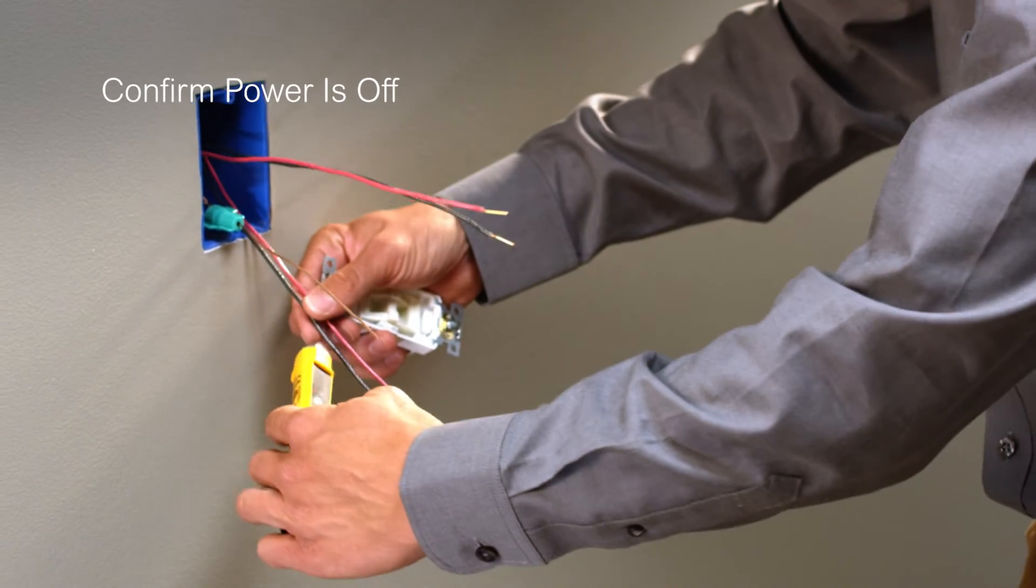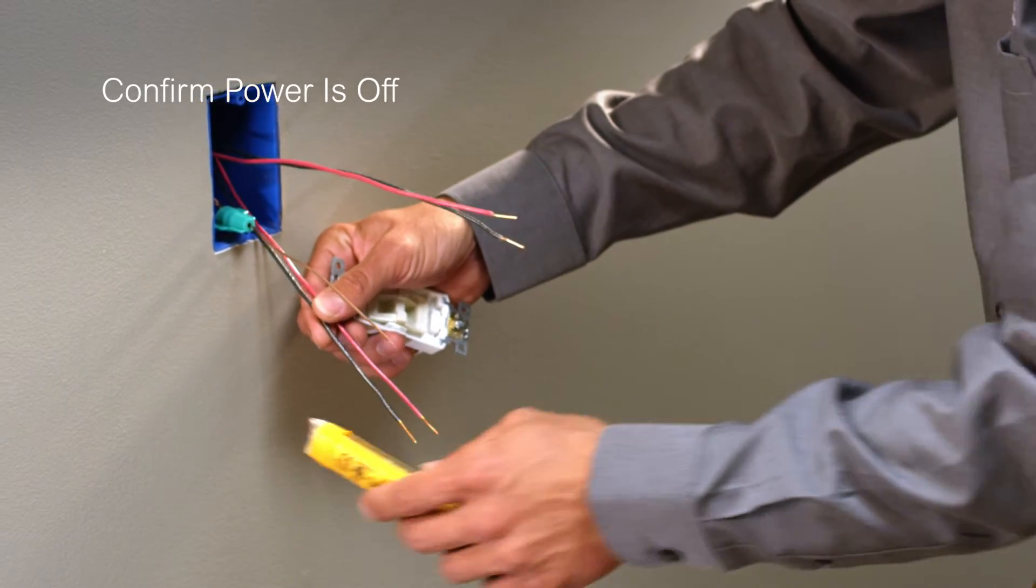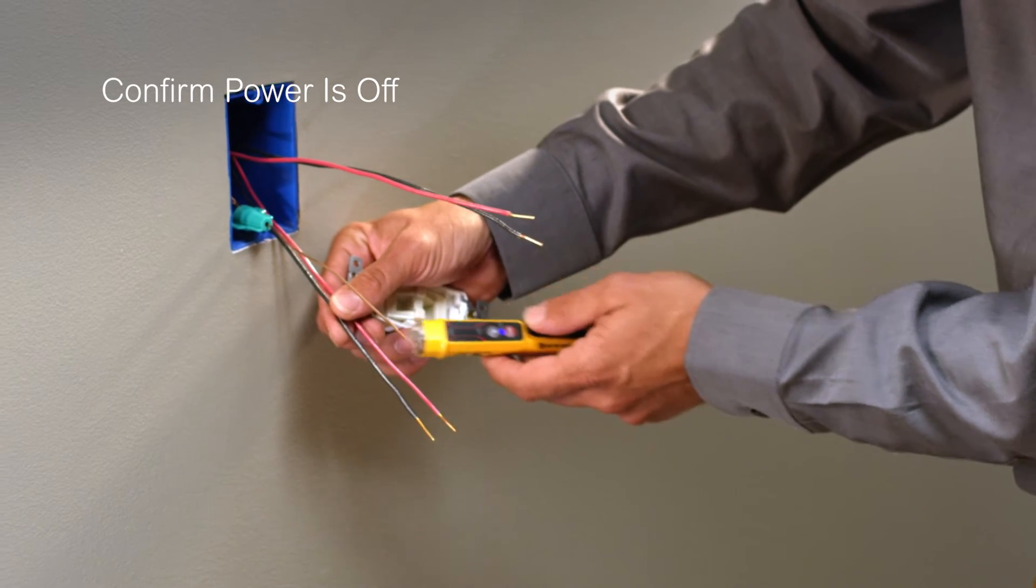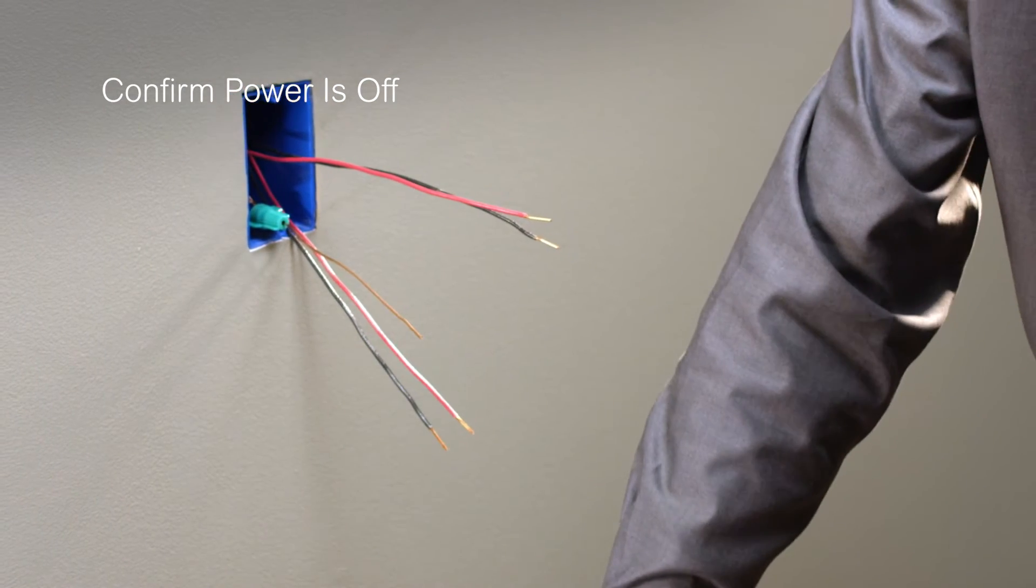Before beginning, ensure the circuit breaker that powers a switch has been turned off at the electrical panel. Confirm it's off using a properly rated voltage sensing device.